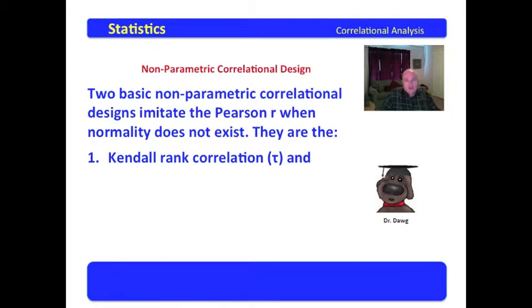the Kendall-rank correlation represented by that little Greek symbol. This right here is the Greek letter tau, T-A-U. So tau replaces R. R requires normality. Tau is a nonparametric design that does not.